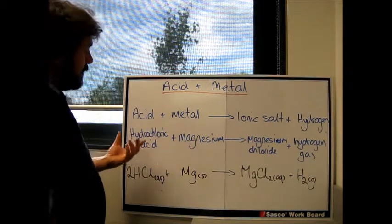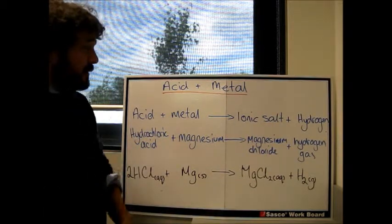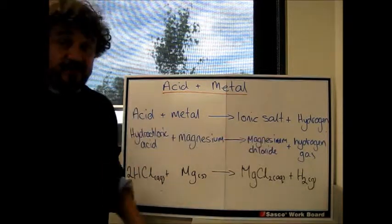So for example, hydrochloric acid plus magnesium gives you magnesium chloride plus hydrogen gas.